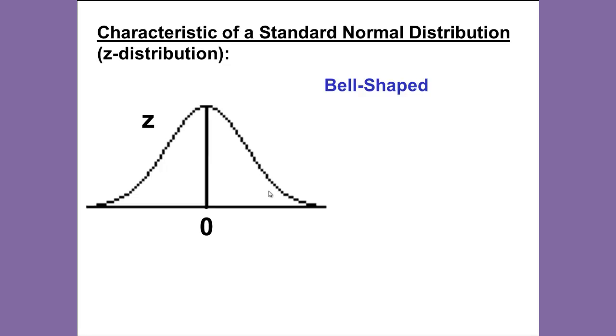The mean of the standard normal distribution is zero and its standard deviation is one. Let me say that again: the mean and standard deviation are known in a standard normal distribution. The mean is zero and the standard deviation is one.